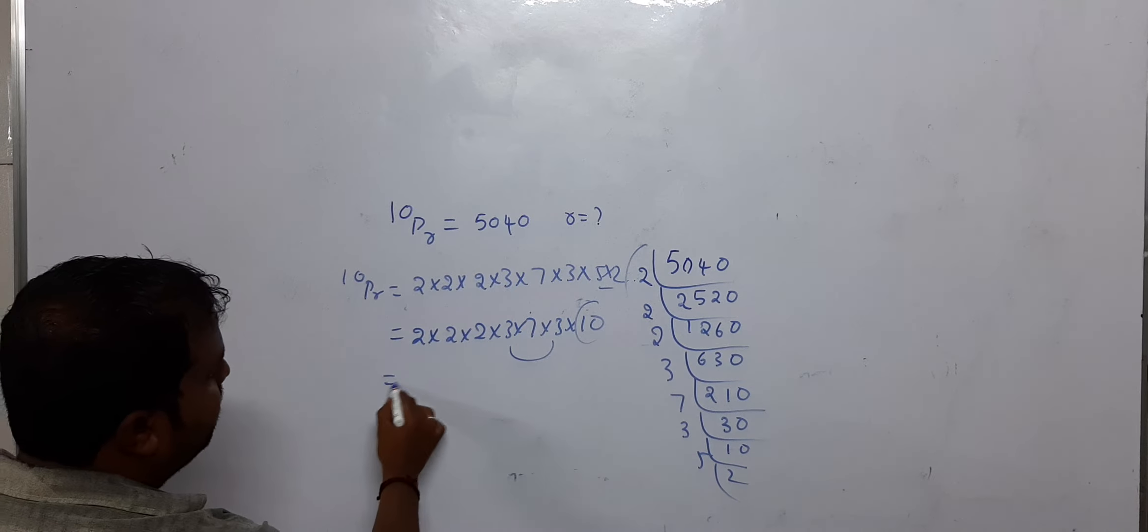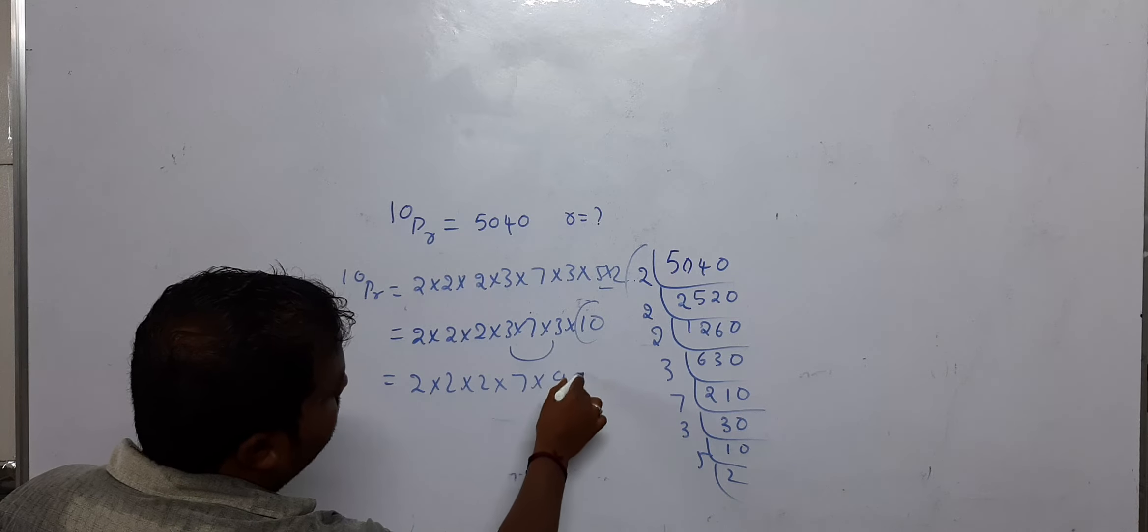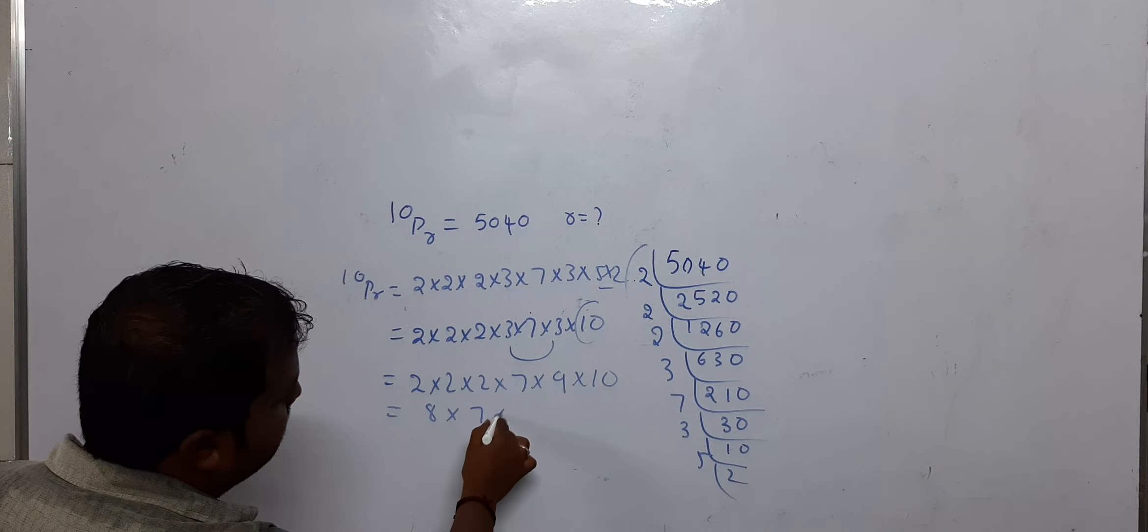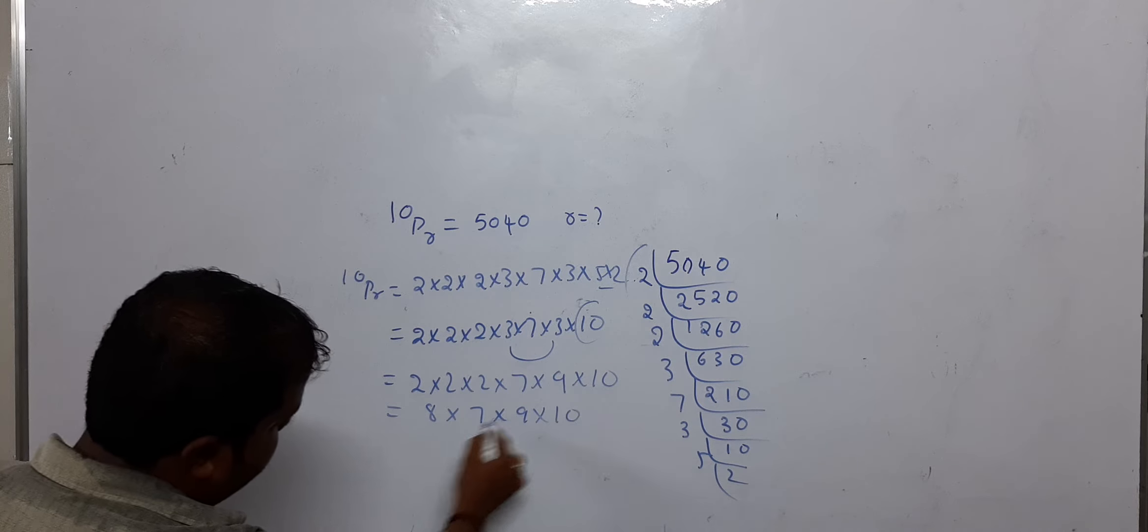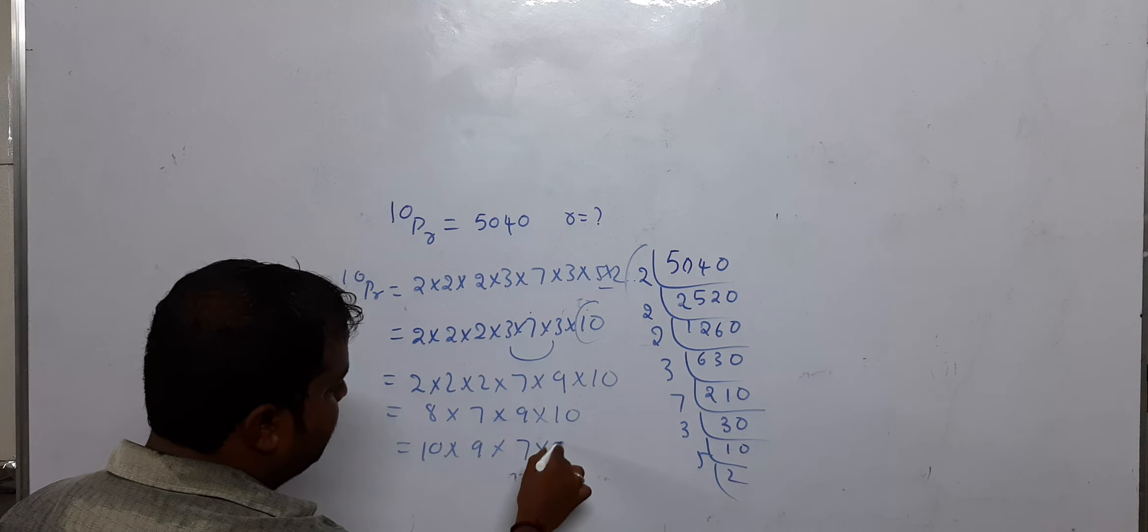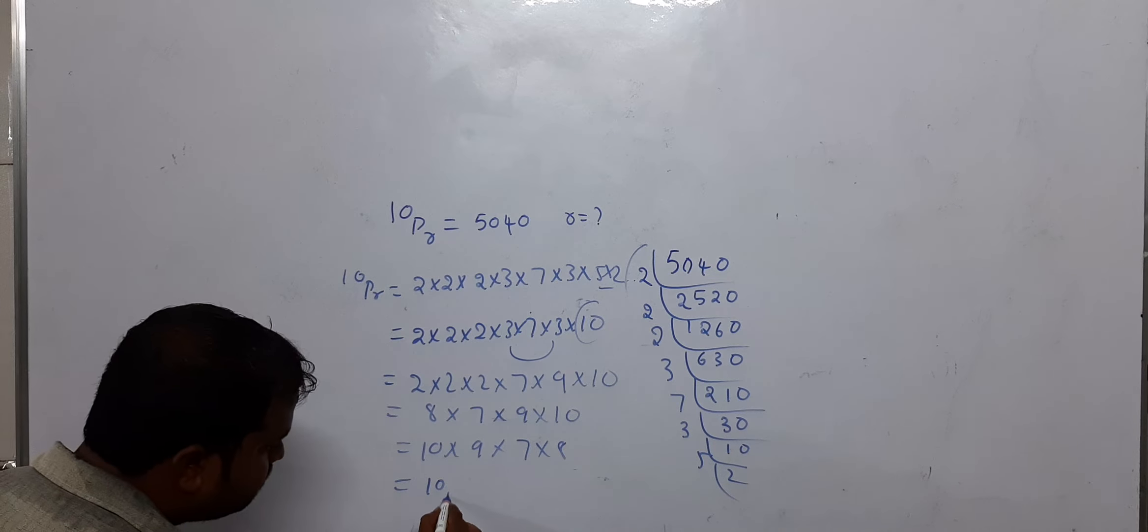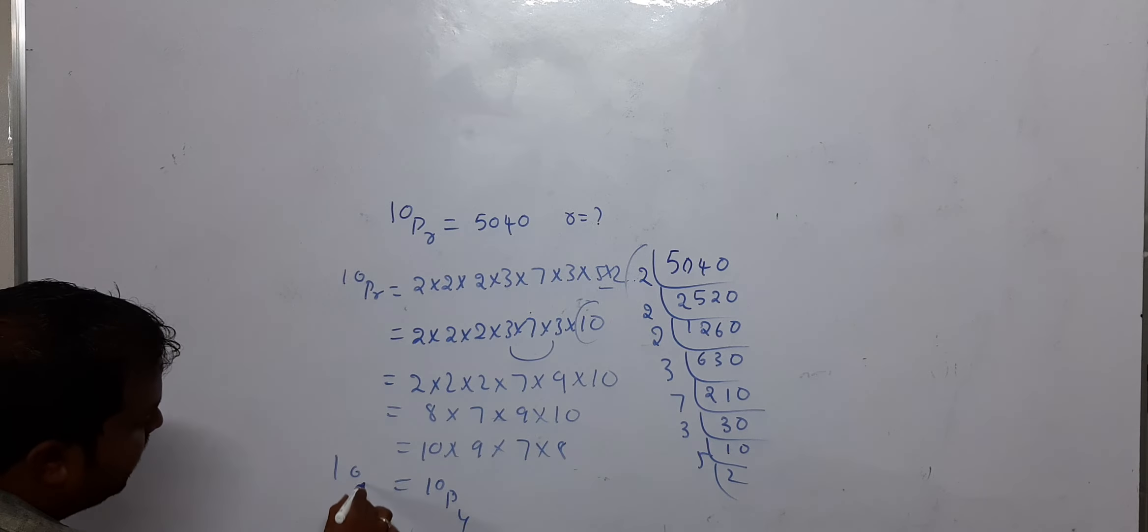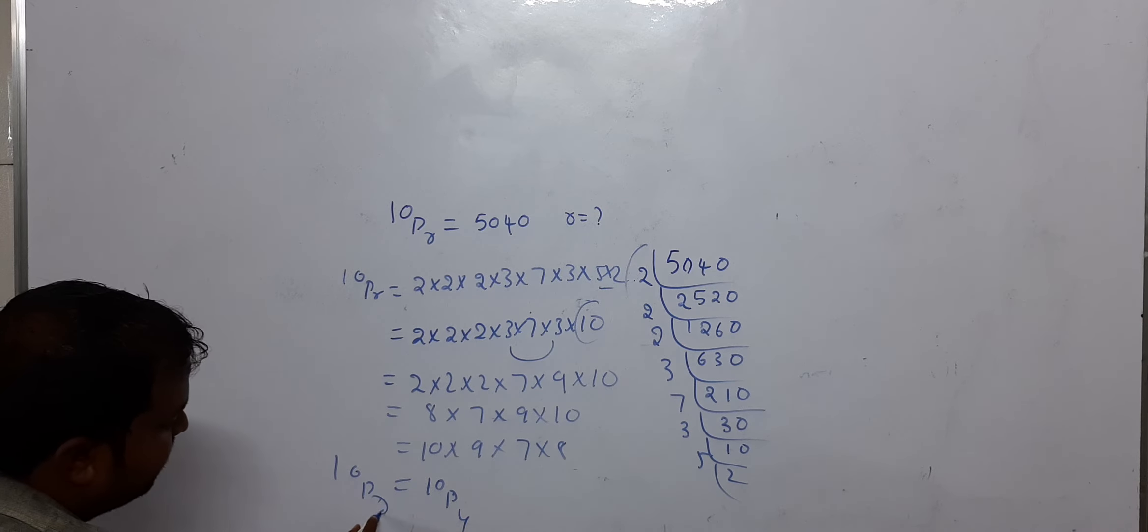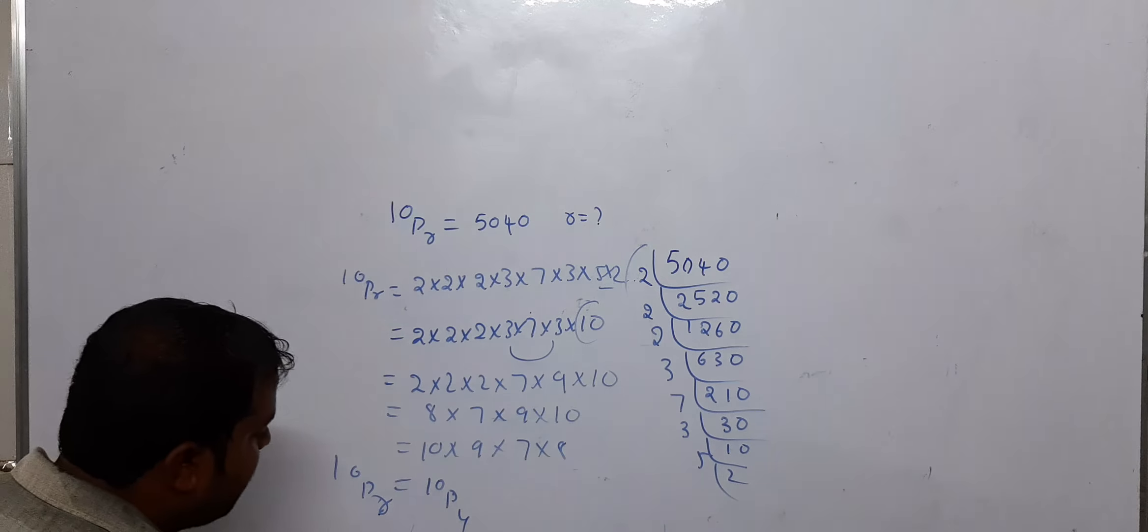So we get 2 times 2 times 2 times 7 times 9 times 10. When we multiply these together, we see that this equals 10 times 9 times 8 times 7. Therefore, 10P4 equals 5040, so R equals 4.